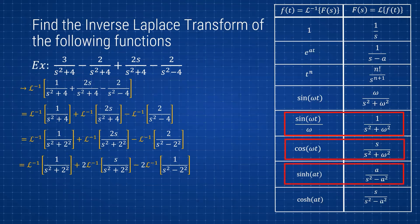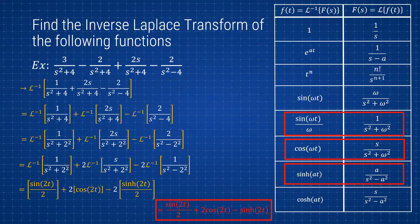The last term, 1/(something minus something), looks like the hyperbolic sine form. With a = 2, if we factor out the 2 and bring it back in it works out. So the inverse Laplace of each term gives: sin(2t)/2 plus 2cos(2t) minus 2·sinh(2t)/2. The two over two cancels, giving a final answer of: (1/2)sin(2t) + 2cos(2t) − sinh(2t).